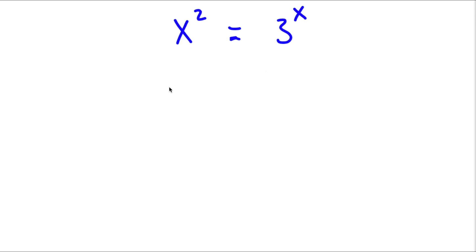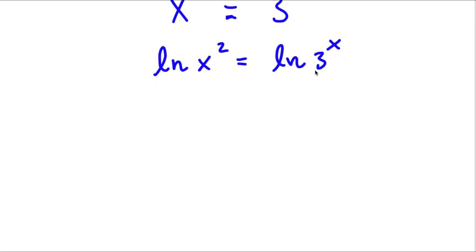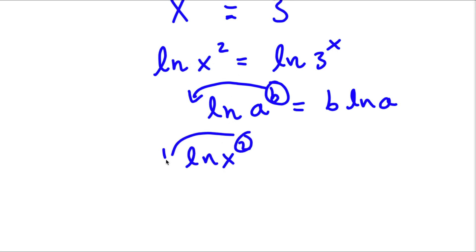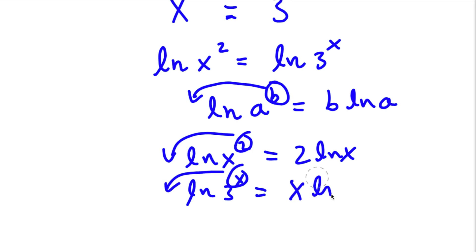The first thing I'm going to do is take the ln on both sides. So now I have ln of x to the power of 2 is equal to ln of 3 to the power of x. Now if I take the ln of something in the form a to the power of b, I can move this exponent b to the front of the logarithm — so this equals b times ln a. So ln x squared equals 2 times ln x, and ln of 3 to the power of x equals x times ln 3.